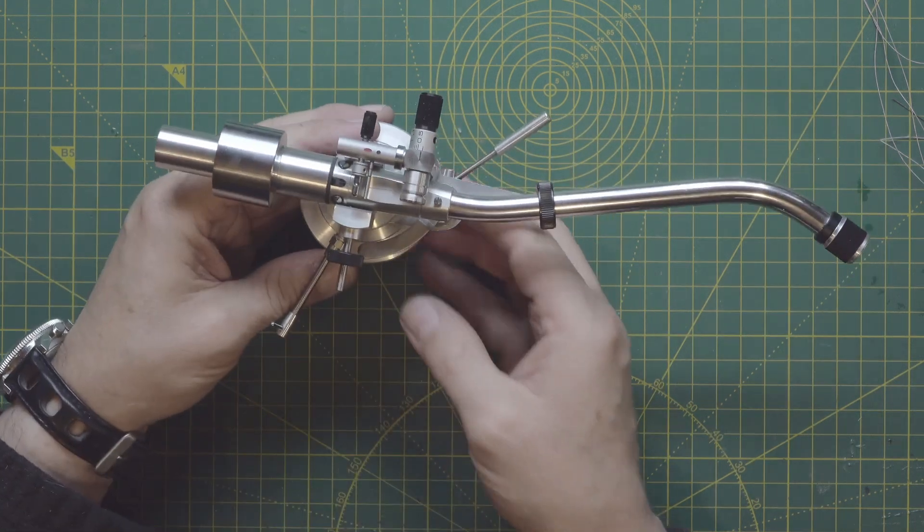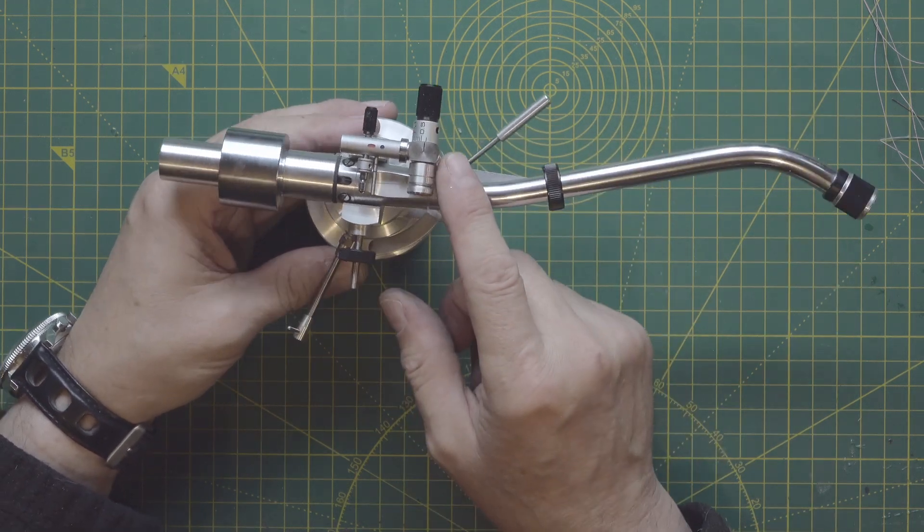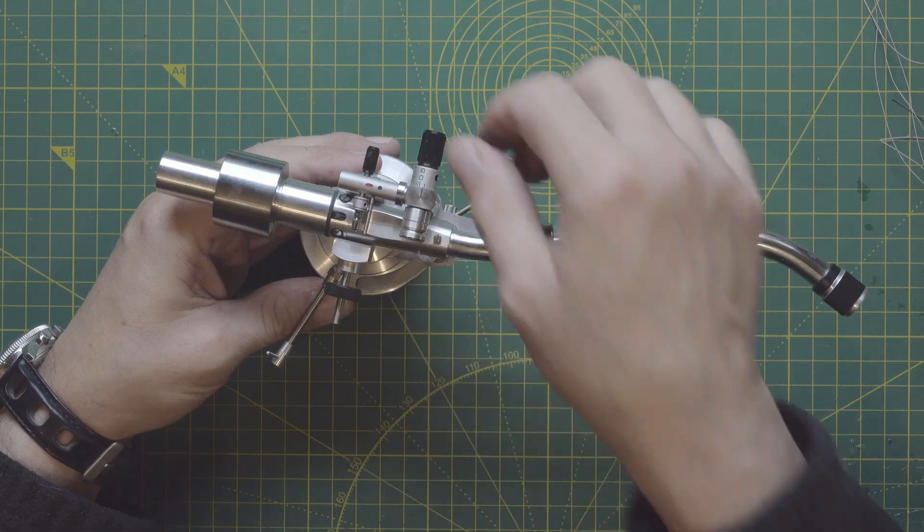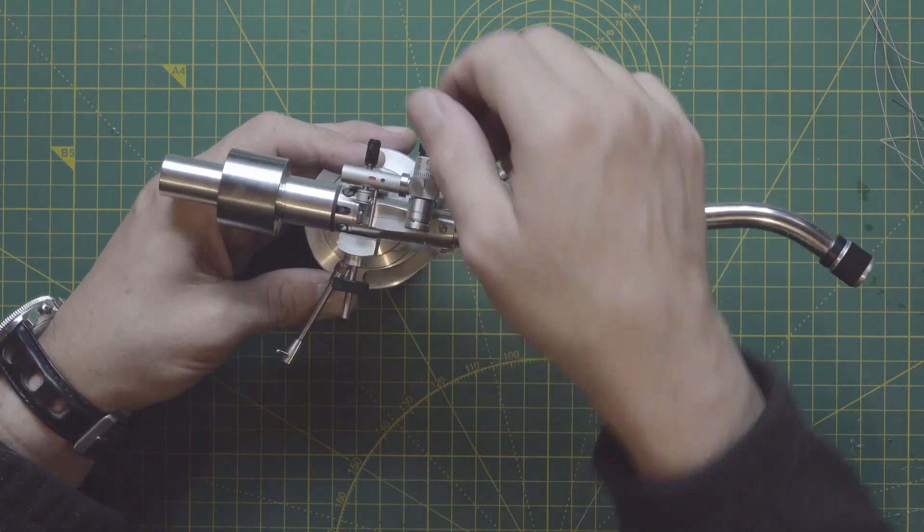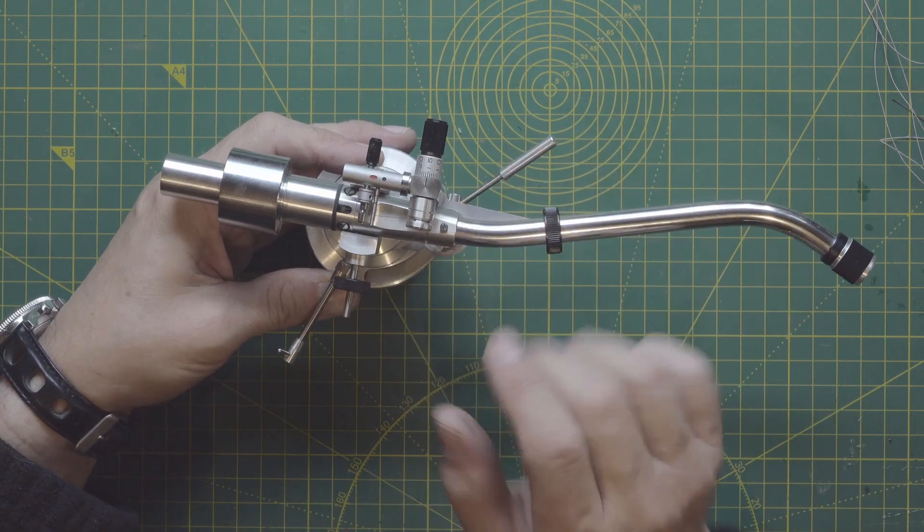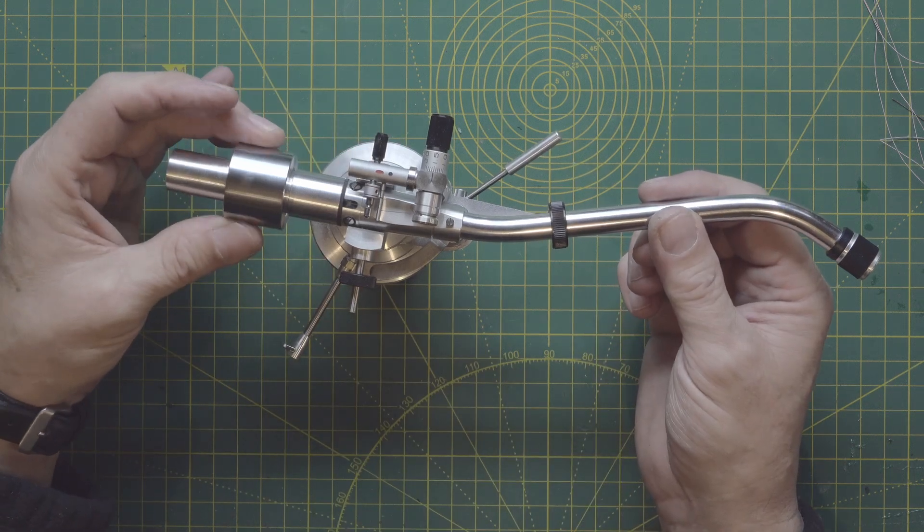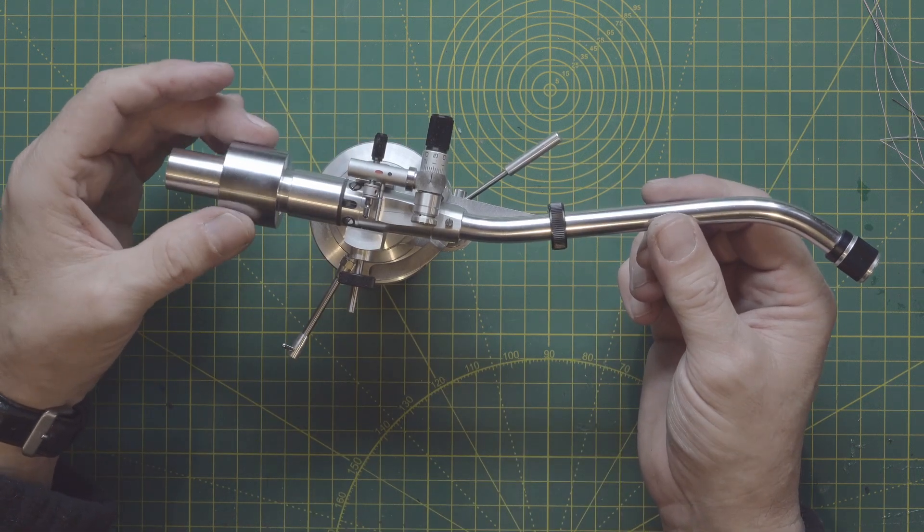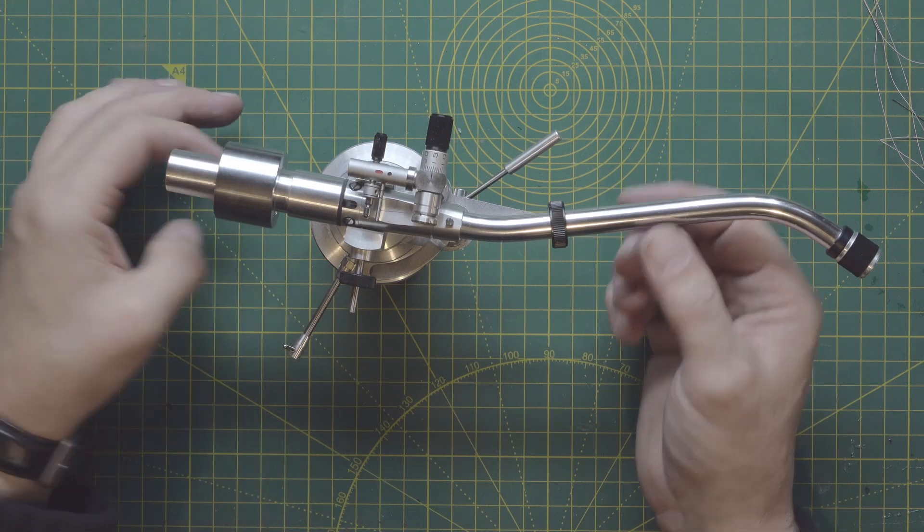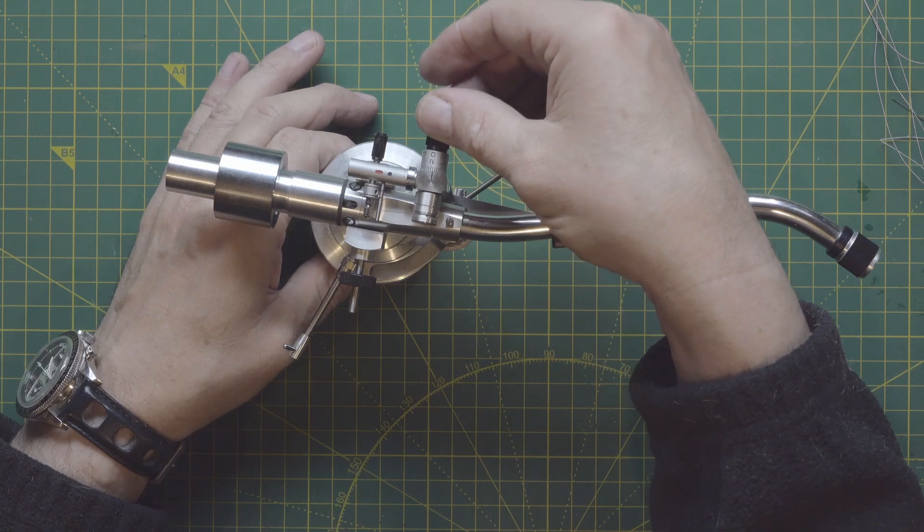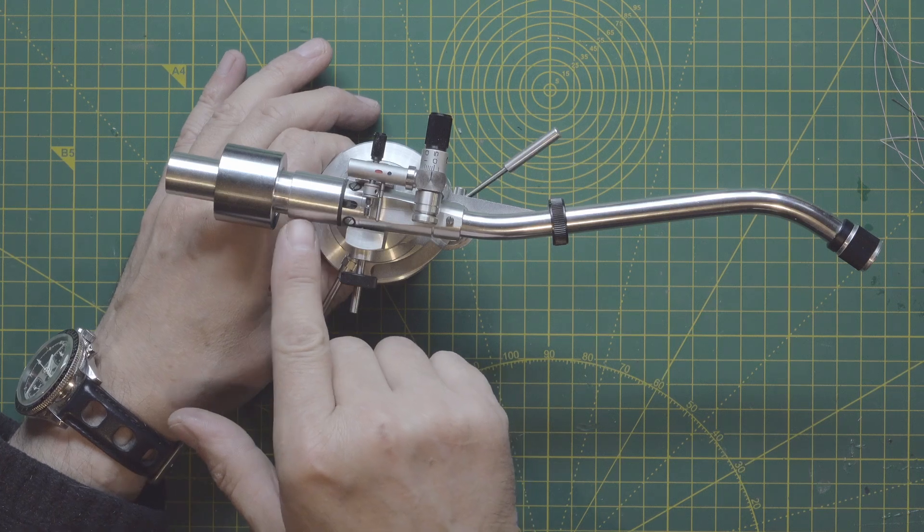But most of all, because of this dynamic vertical tracking force. I'm not a great fan of this system. How it works - you balance statically at zero your cartridge with this weight, and then you set the tracking force with this knob. There is a coil inside here.